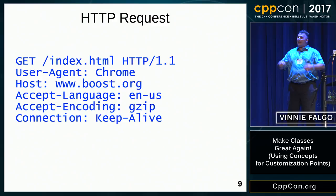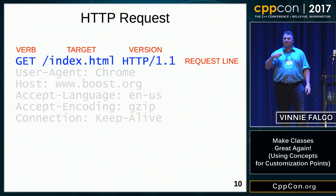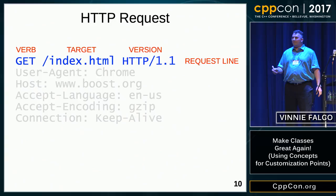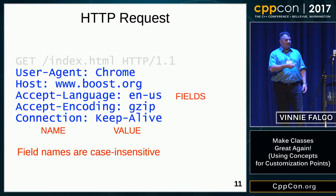An HTTP request looks like this. The first thing you notice is that it's text — a readable protocol designed a long time ago. The first line is called the request line; it contains the verb (GET), the target (index.html), and a version. After the request line, we have name-value pairs called fields. User-Agent is the name, Chrome is the value. The field names are case-insensitive — that's important, we'll come back to that.